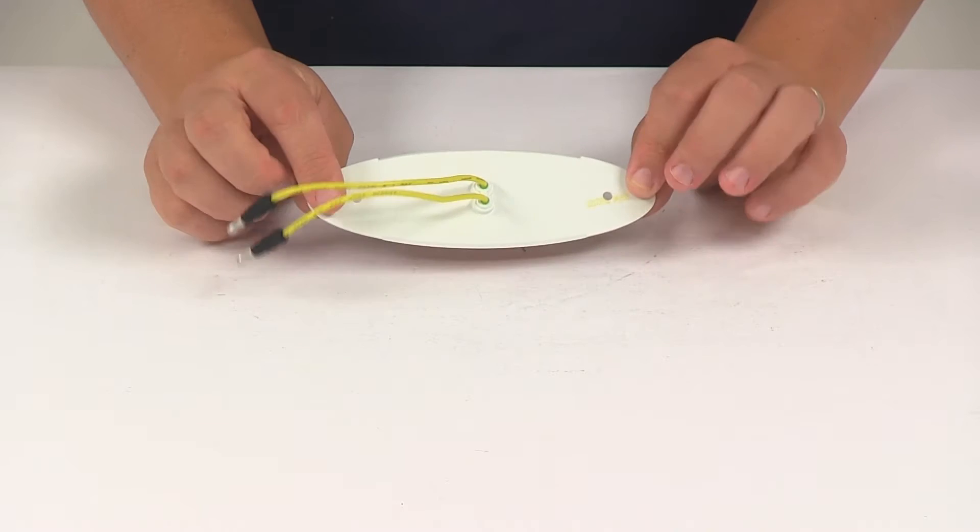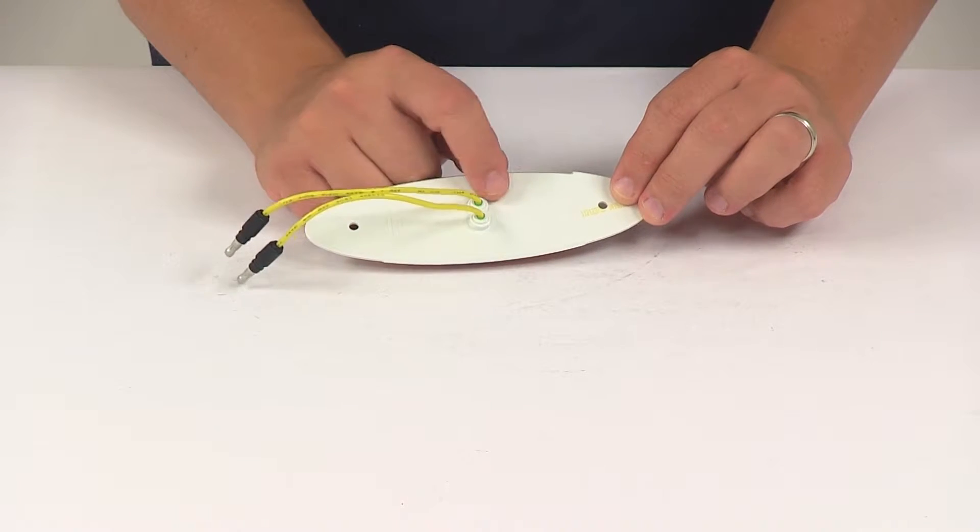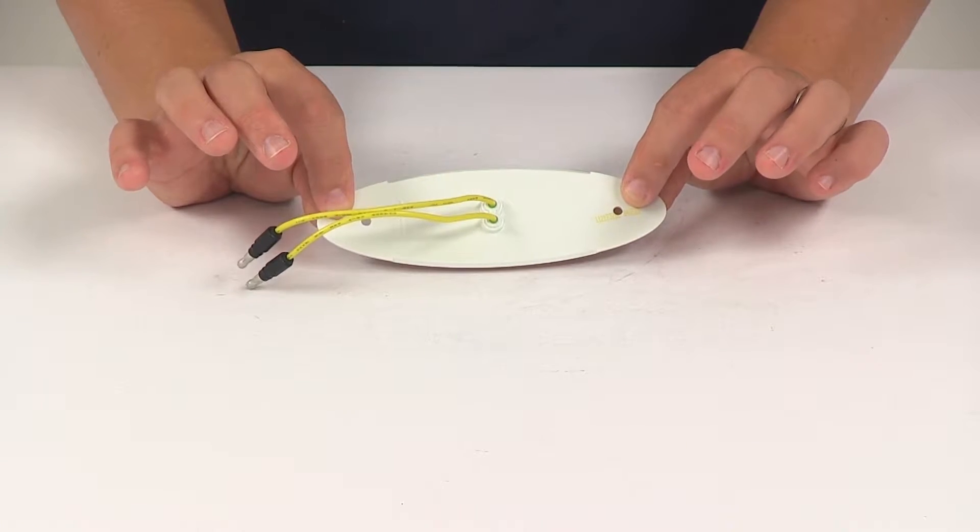This is a surface mount installation that mounts on the surface of the trailer. The installation requires a small hole for the wiring to feed through. It has two mounting locations, and hardware is not included.